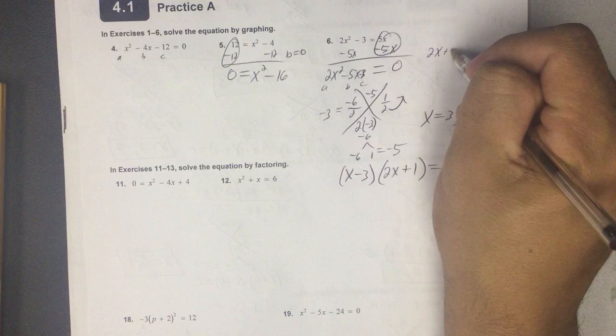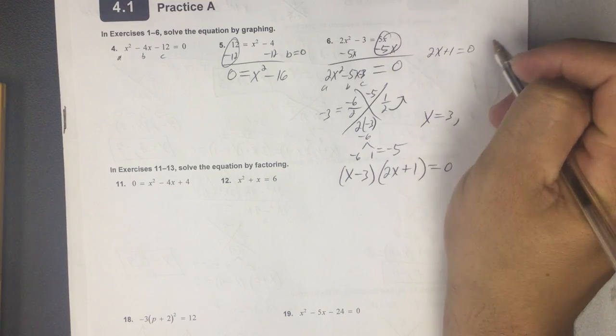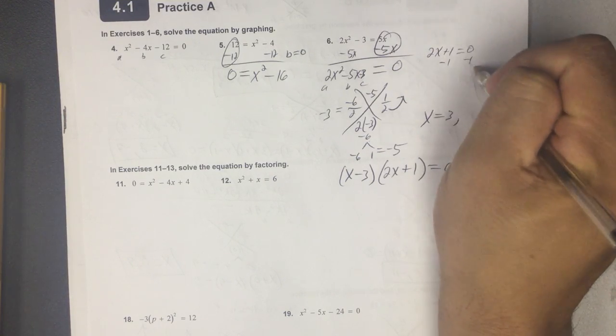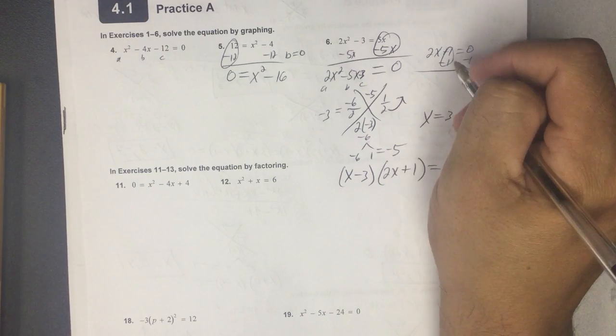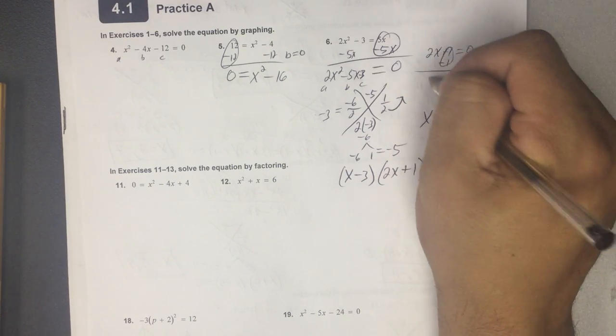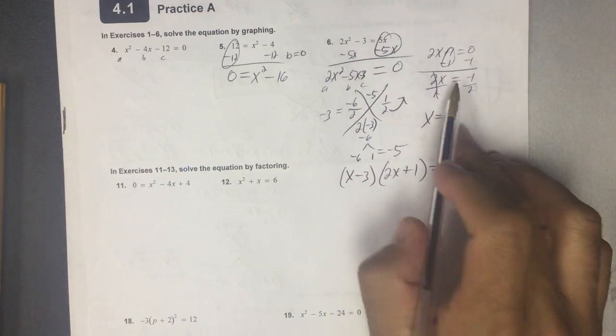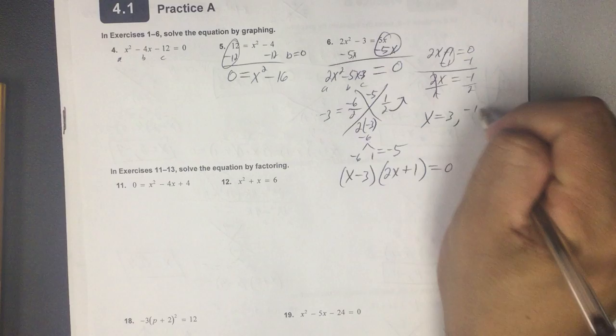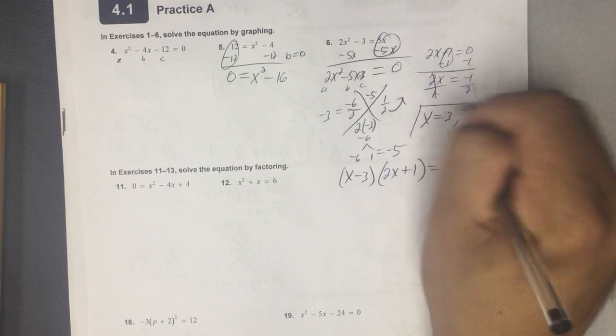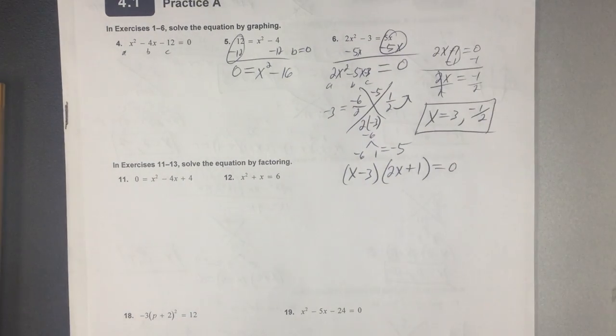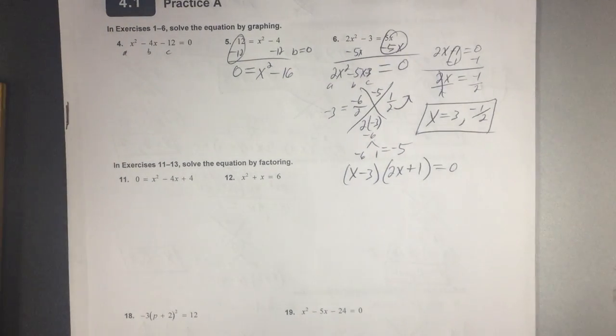So again, go up here and solve it. 2x plus 1. When does that equal 0? Minus 1, minus 1. Negative 1. 2x equals negative 1. Divide by 2. Divide by 2. That cancels. So x equals negative 1 half. Okay? Try the rest of those.